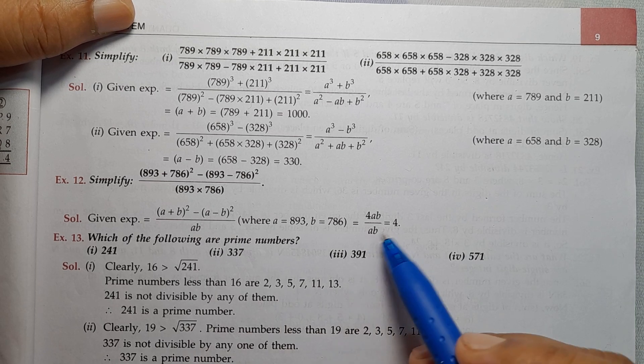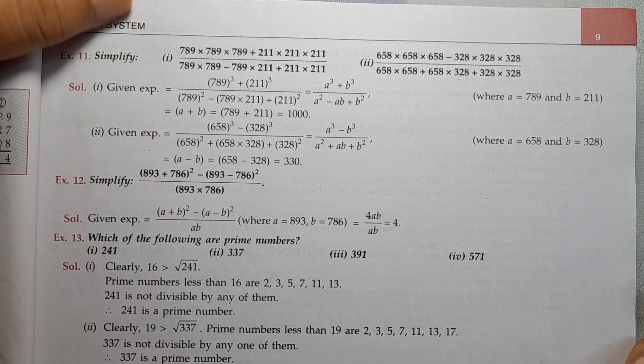Divided by AB, so AB cancels with AB. 4 is the answer.